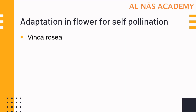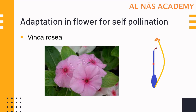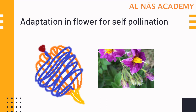Another example is Vinca rosea. The flower is funnel-shaped, with the anther at the topmost part and the gynoecium at the lower end. When the anther matures, the style elongates and comes closer to the anther, and pollens are released from the anther to the stigma of the same flower. The last example is Solanum tuberosum — potato. In potato, both anther and style are elongated, but the style coils around the anther and ensures that self-pollination takes place.